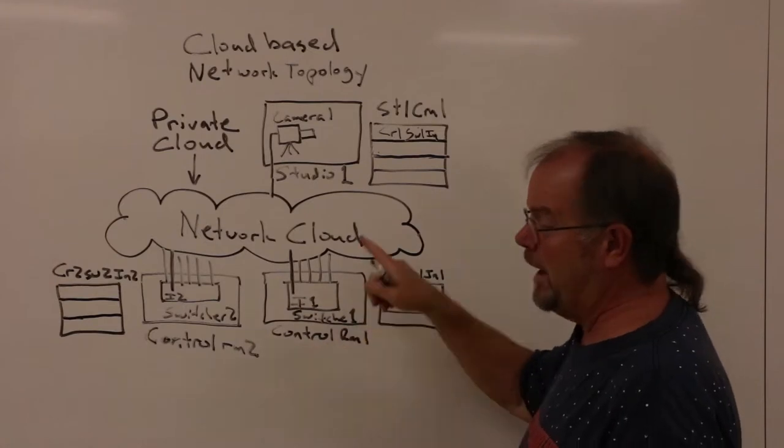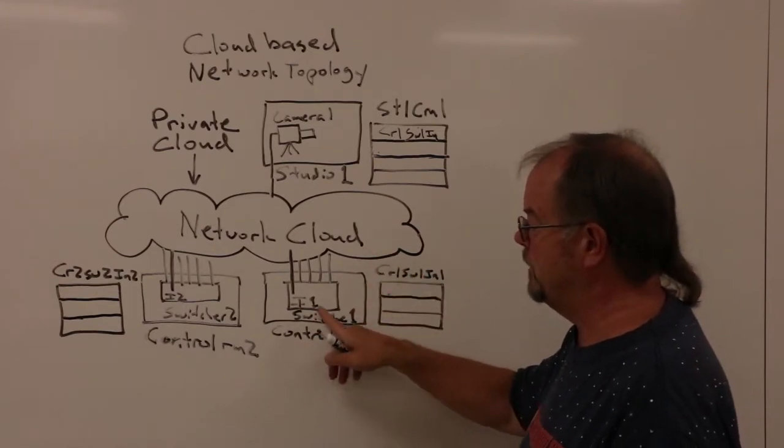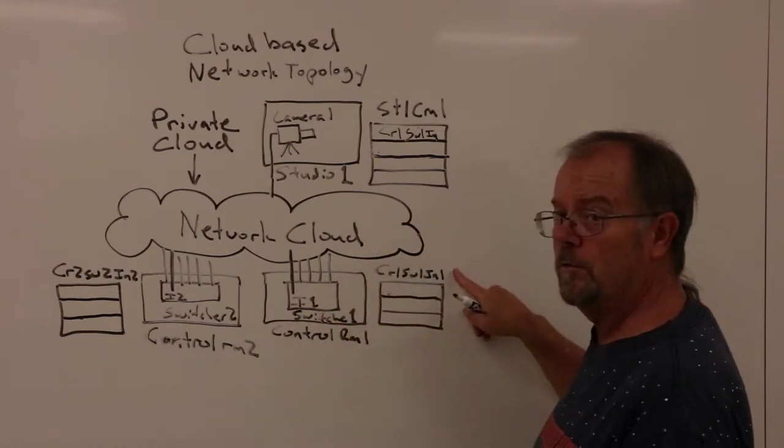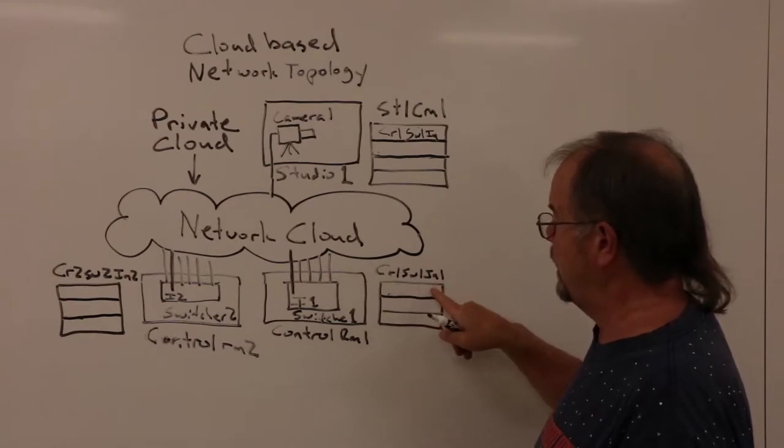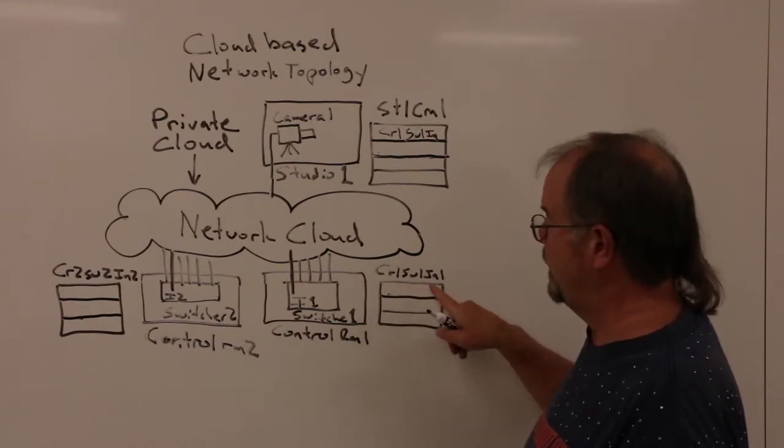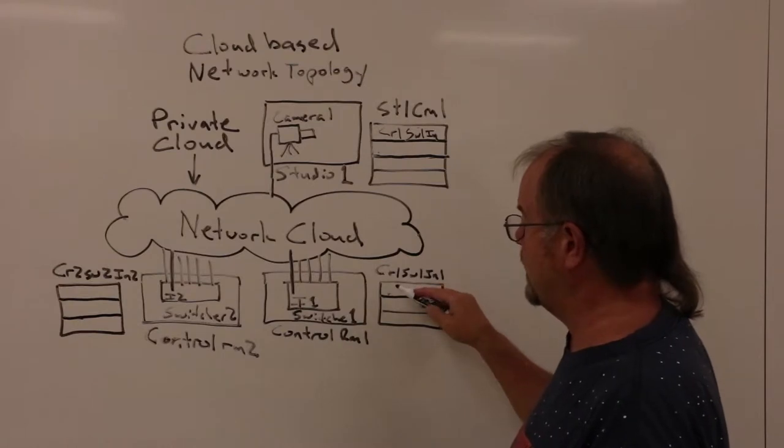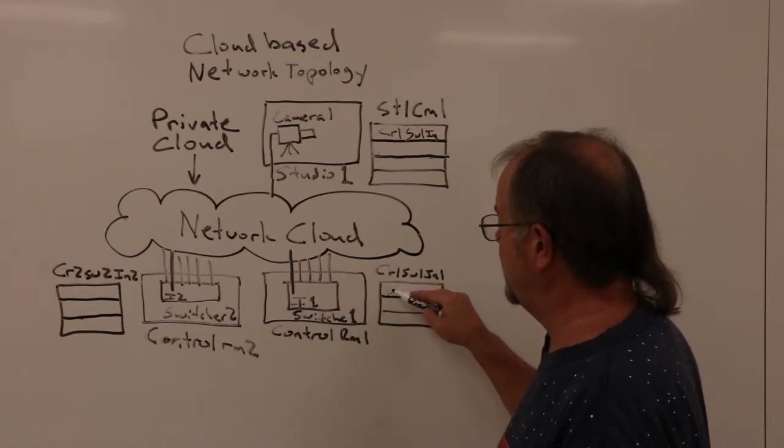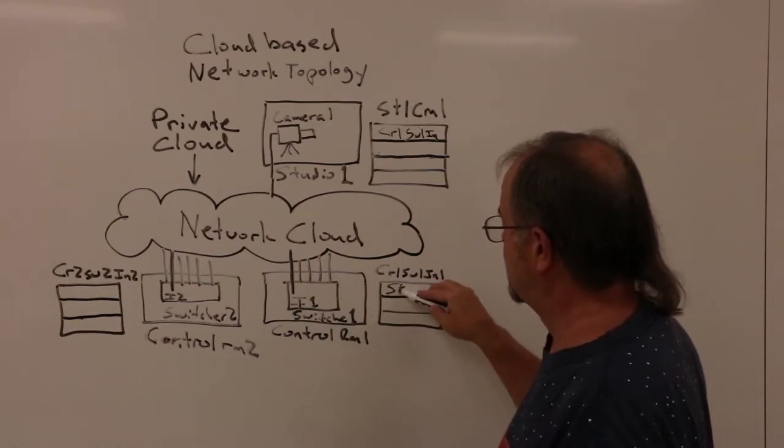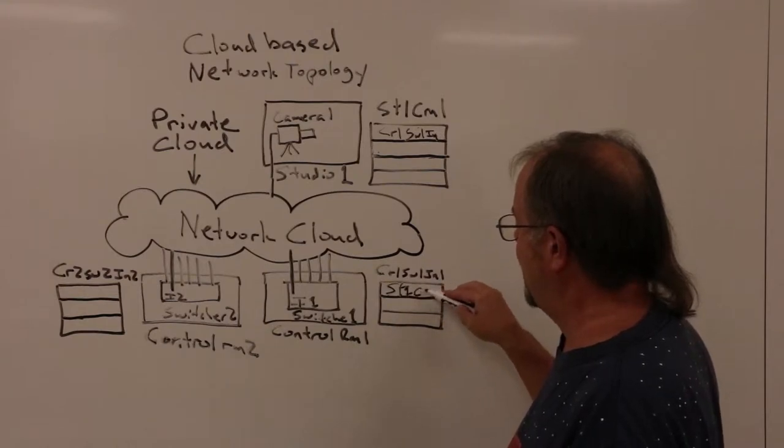And likewise, a matching entry is made in the control room switcher saying that control room 1, switcher 1, input 1 will receive its signal from studio 1, camera 1.